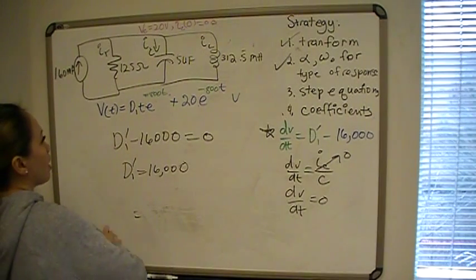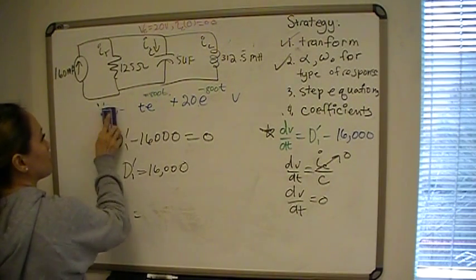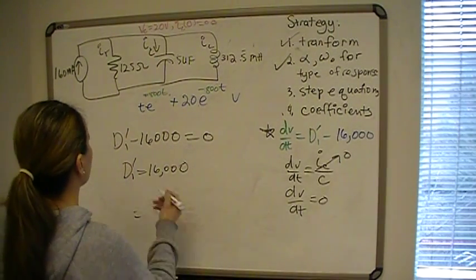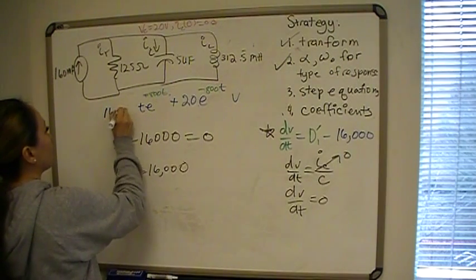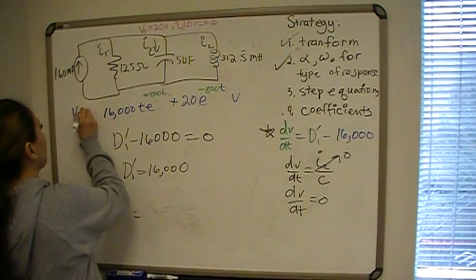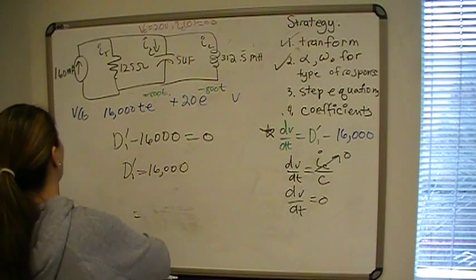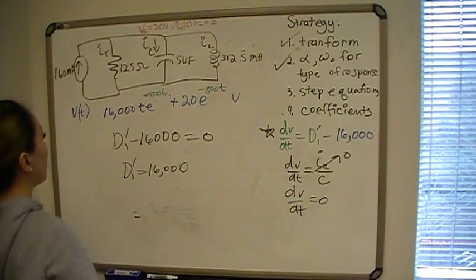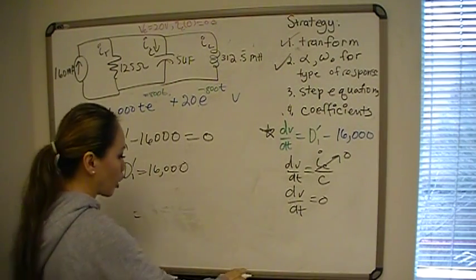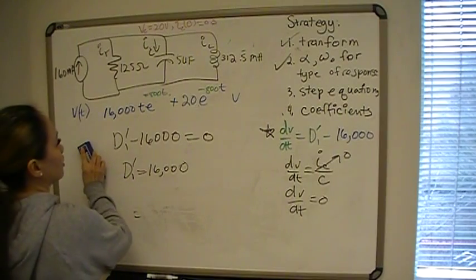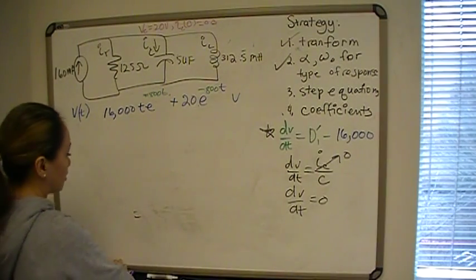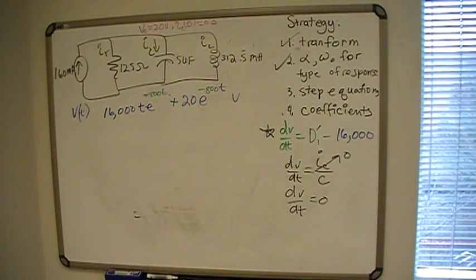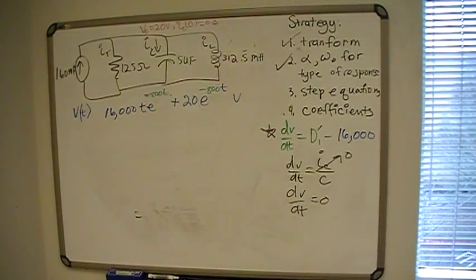Now we can replace D1 with 16,000 and we have our complete voltage equation. That is part one. The second part is finding the current through the inductor, which will be covered in the next video.